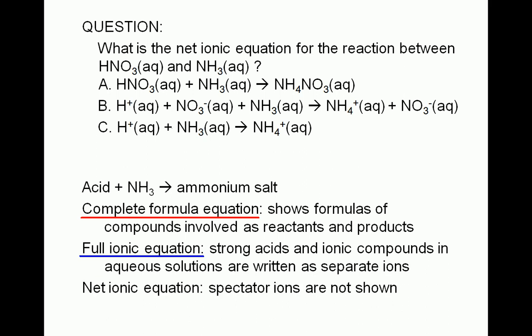If upon writing the full ionic equation, we find that nothing actually happened to some of the ions, we call them spectator ions. We take them out of the equation and we get what's called the net ionic equation.